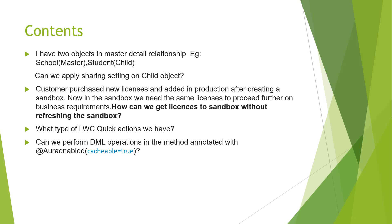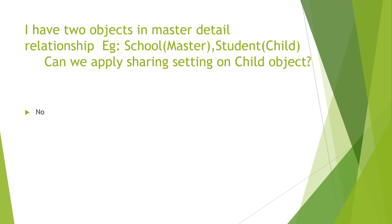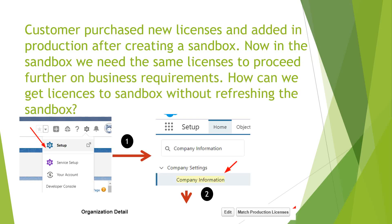Now the answers. For the first question — I have two objects in a master-detail relationship, can we apply sharing settings on the child object? You cannot do that, because all sharing settings applied to the master object, in our case the school object, automatically apply to the student child object. When objects are in a master-detail relationship, child objects always inherit all sharings and ownership from the master only.